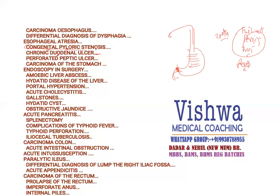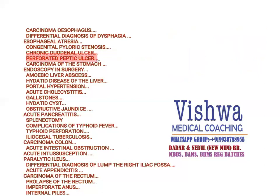Duodenal ulcer is very commonly asked in medicine as well as surgery. For surgical approaches, we require intervention only when the ulcer is getting perforated; otherwise, we have a medical approach. Perforated peptic ulcer — in this condition, a known case of peptic ulcer presents with increased guarding and rigidity in the abdomen, which can lead to septicemia and the patient may die. Diagnosed with the help of gas under the diaphragm on X-ray standing of the abdomen.